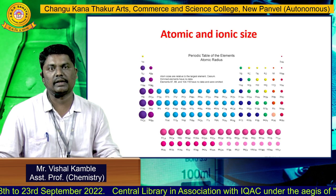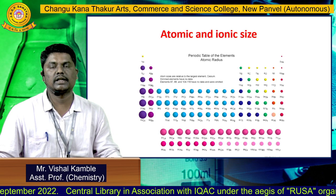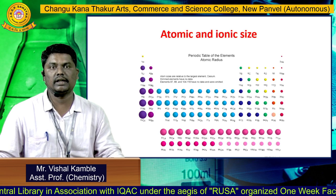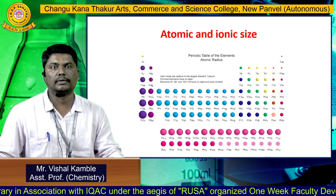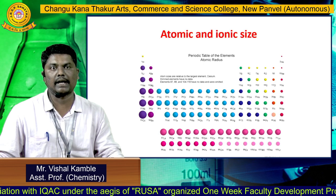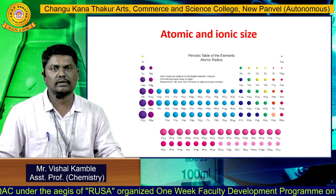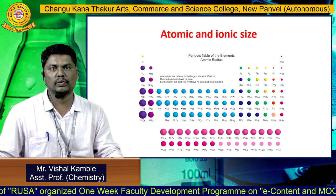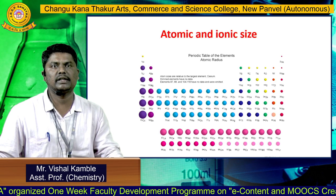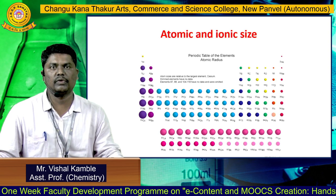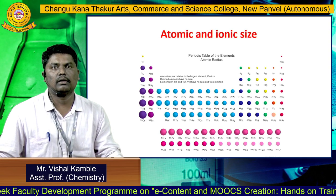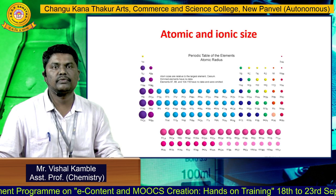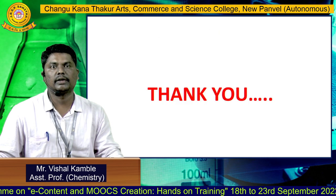For atomic and ionic size, s-block alkali metal size increases from top to bottom. Alkaline earth elements also increase, but in the lanthanide series there is lanthanide contraction — size decreases slightly. In the actinide series, size also decreases. The d-block elements can be clarified using these images, which show ionic and atomic size trends. Thank you very much.